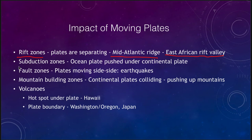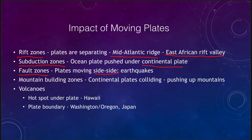We also get subduction zones, which occur where ocean plate is pushed under a continental plate. Ocean plates are denser and will actually sink down below the less dense continental plates. We can get fault zones, such as in California, where plates are moving side to side — instead of colliding or pushing down below each other, they move side by side, and stresses will build up and then be released in massive earthquakes. We can also get mountain building zones where continental plates are colliding — two continental plates of similar density will push together, forming great mountain ranges.